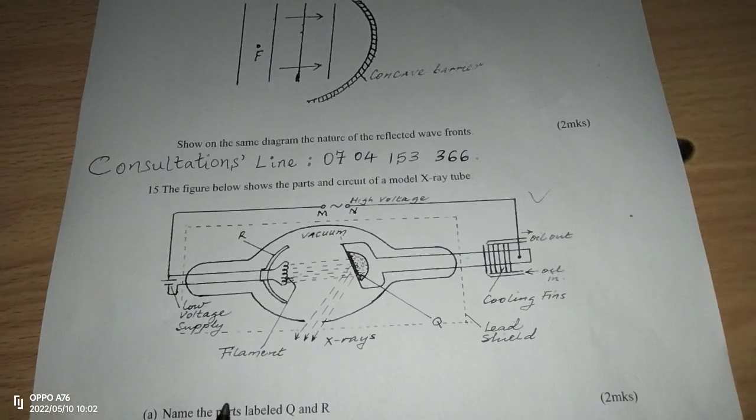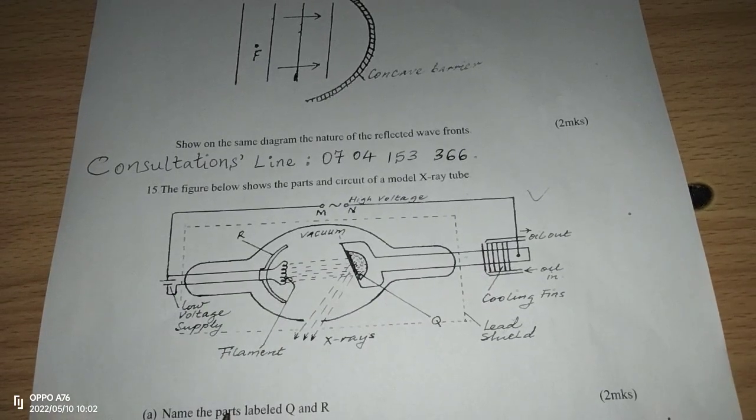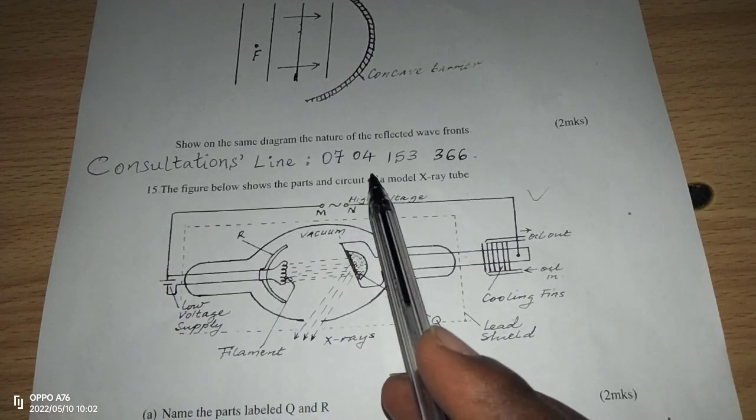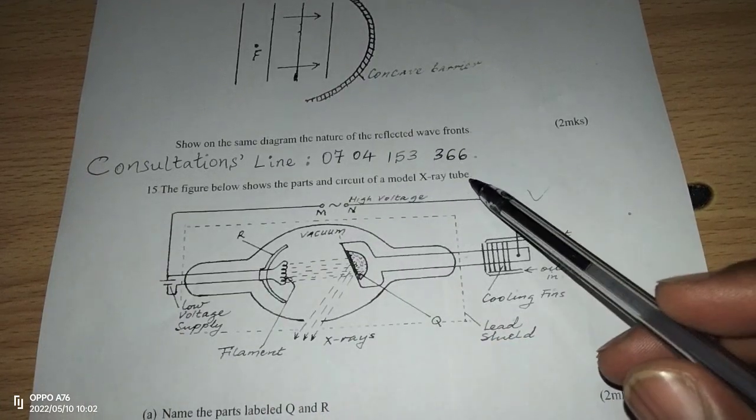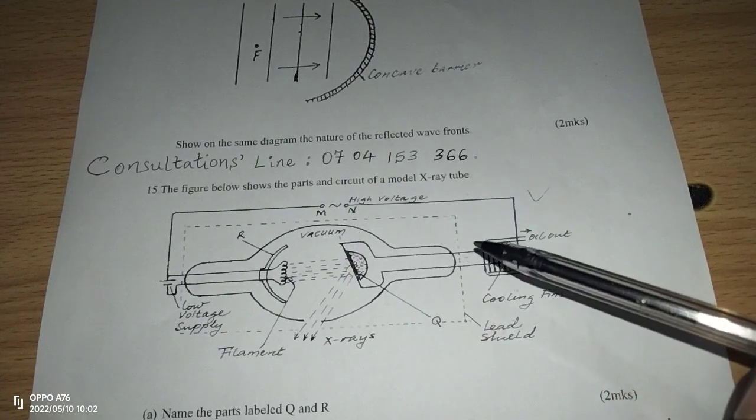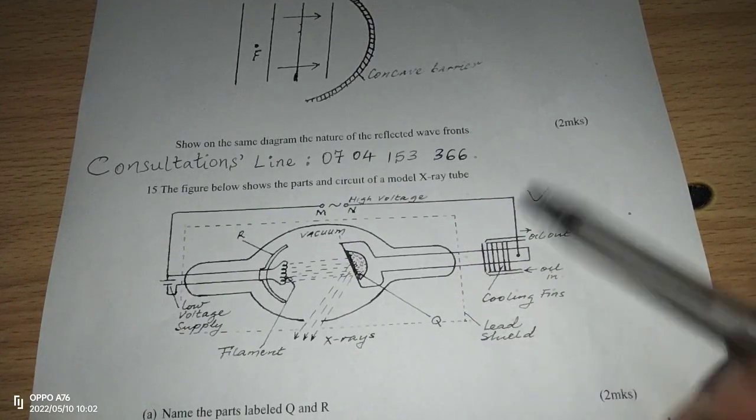Thank you for joining this lesson. We are going to look at the production of X-rays in the X-ray tube. Remember our consultation line is 0704 153 366. Subscribe to Shifting Grids and share the link with your friends.